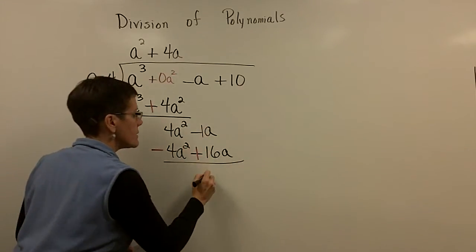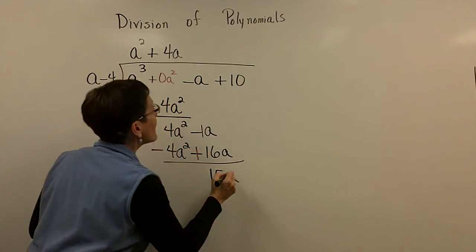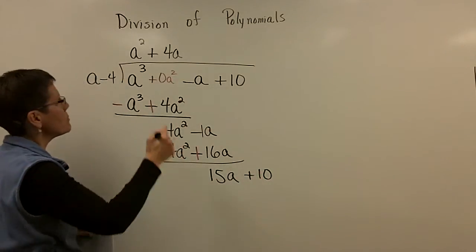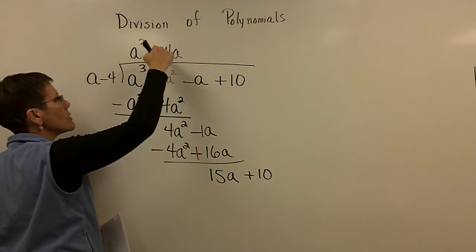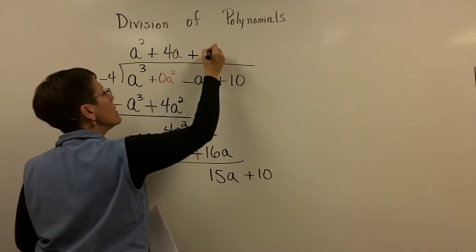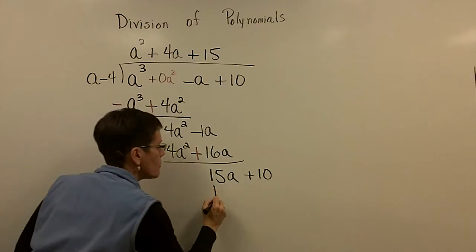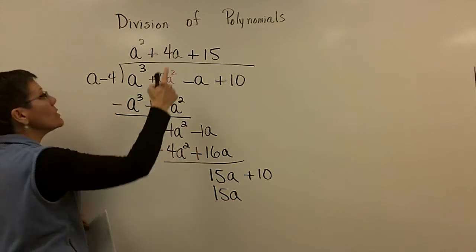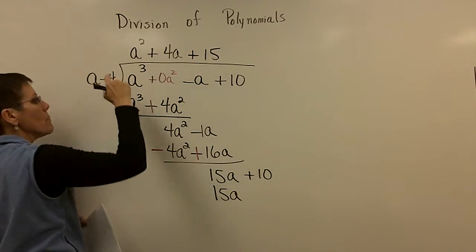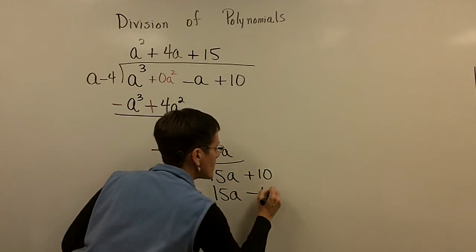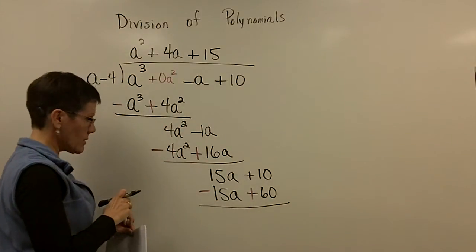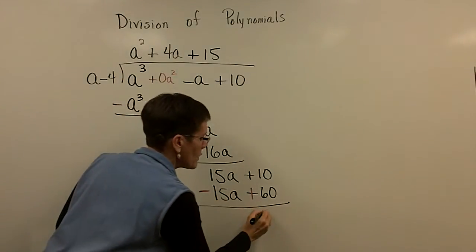This minus 1 a and 16 a adds to be 15 a. And then I look up and I bring my 10 down. And I go again. Please notice descending order a squared plus 4 a plus now a constant. What number times a gives you 15 a? And once you take that 15 times a and write it down, you've got to remember to take 15 times a minus 4 and get a minus 60. And then change your signs and change your signs.